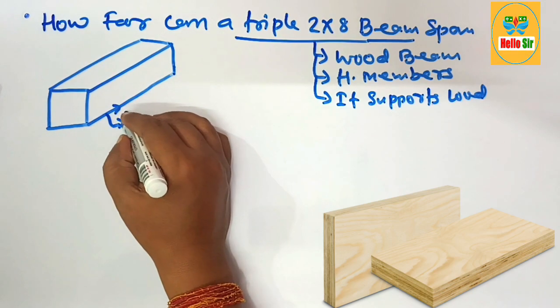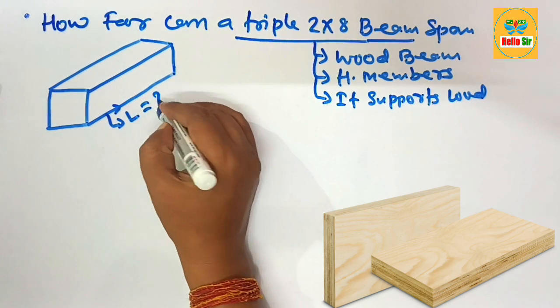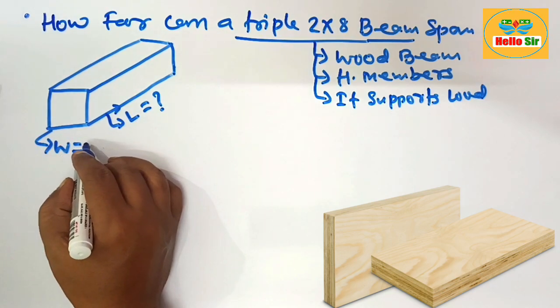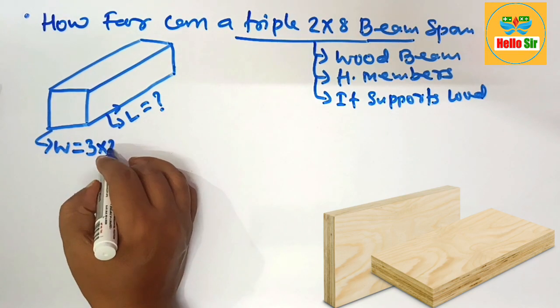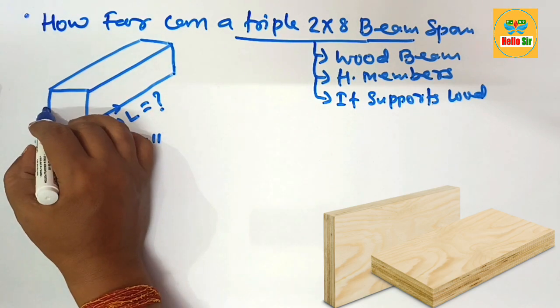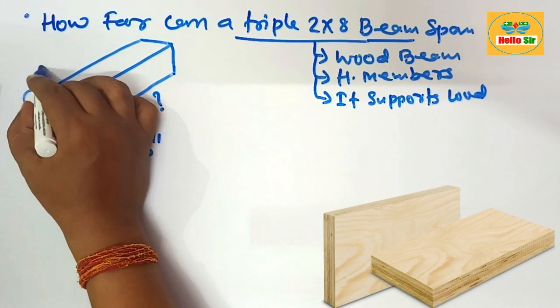This section is the span length you have to figure out. This one is the width section of beam, which is triple ply—three multiply two inches equals six inches. And this one is the depth section of beam, which is about eight inches.